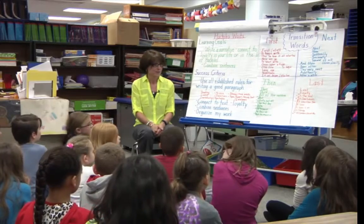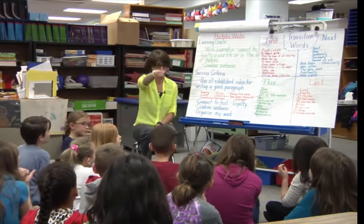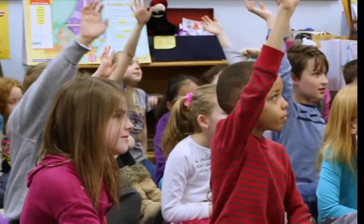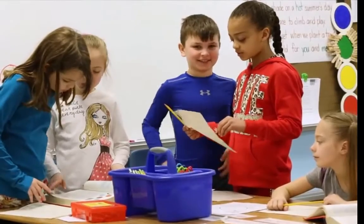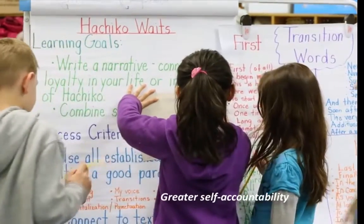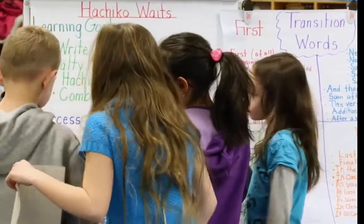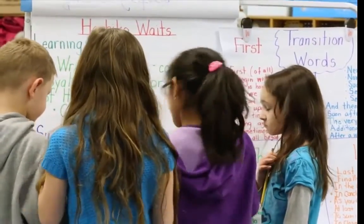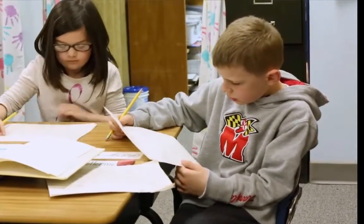I do co-construct the success criteria with them because it gives them ownership in what they're responsible for. I do think it gives them a better understanding of what they need to make sure that they include in their writing. And honestly, I do get excited about it because it truly does work. It's different than the way we used to do our writing. The children have a greater self-accountability when they know that all they have to do is walk over with their piece and see if they've taken care of everything they need to take care of. And typically, the kids do that even before they ask somebody else to look, which shows me that they're starting to take some self-responsibility — they're starting to do some self-editing and self-checking before they even talk to peers.